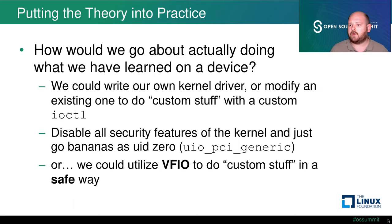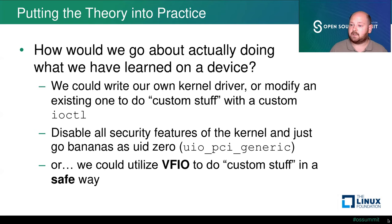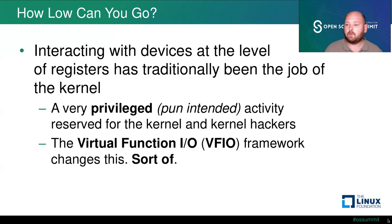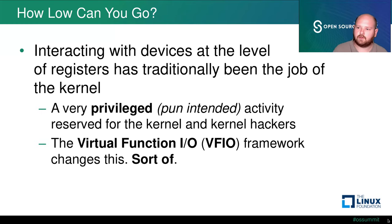This makes these frameworks less suitable for really low-level device inspection and testing. If we wanted to do what we learned in part one, we could modify the standard NVMe kernel driver in Linux to add custom IOCTLs, or disable kernel security features and use the UIO PCI generic driver. Or we could actually utilize the Virtual Functions IO framework to do this kind of custom stuff, but in a very safe way. The problem is that interacting with devices at the register level has traditionally been a job for the kernel — a very privileged activity.